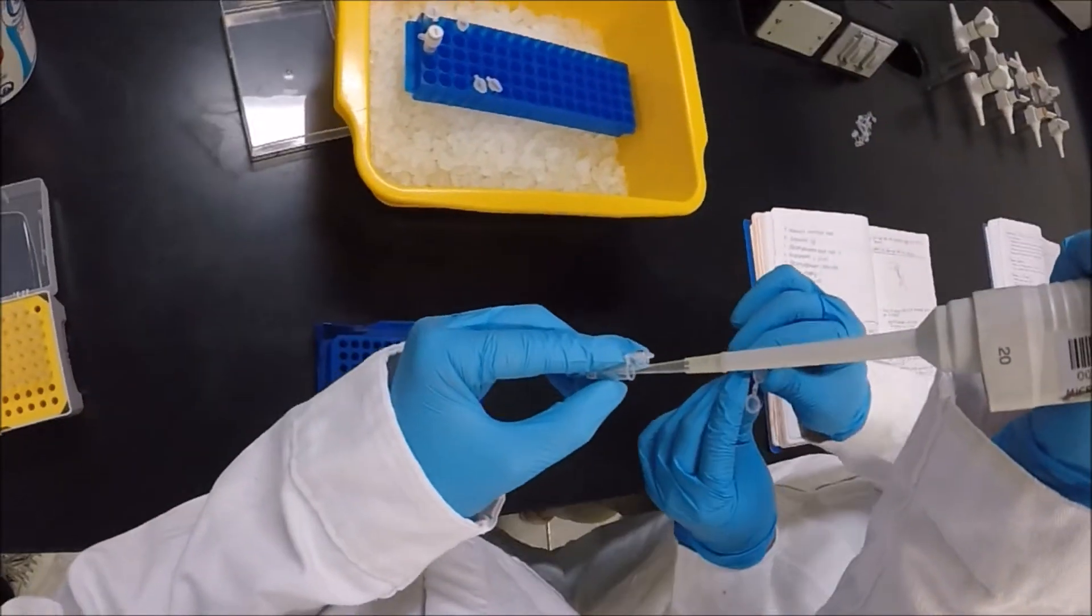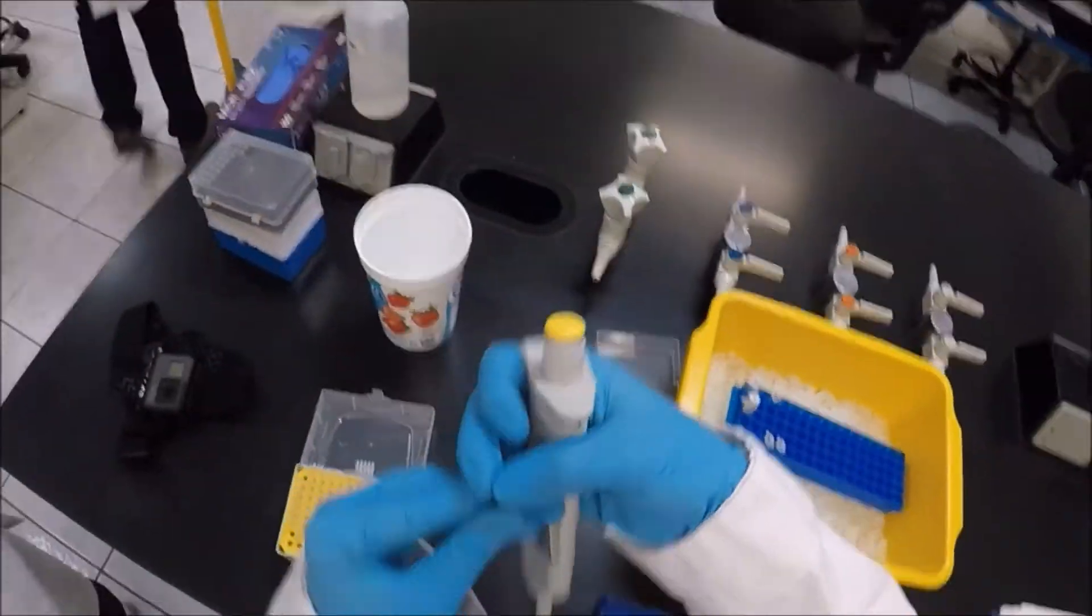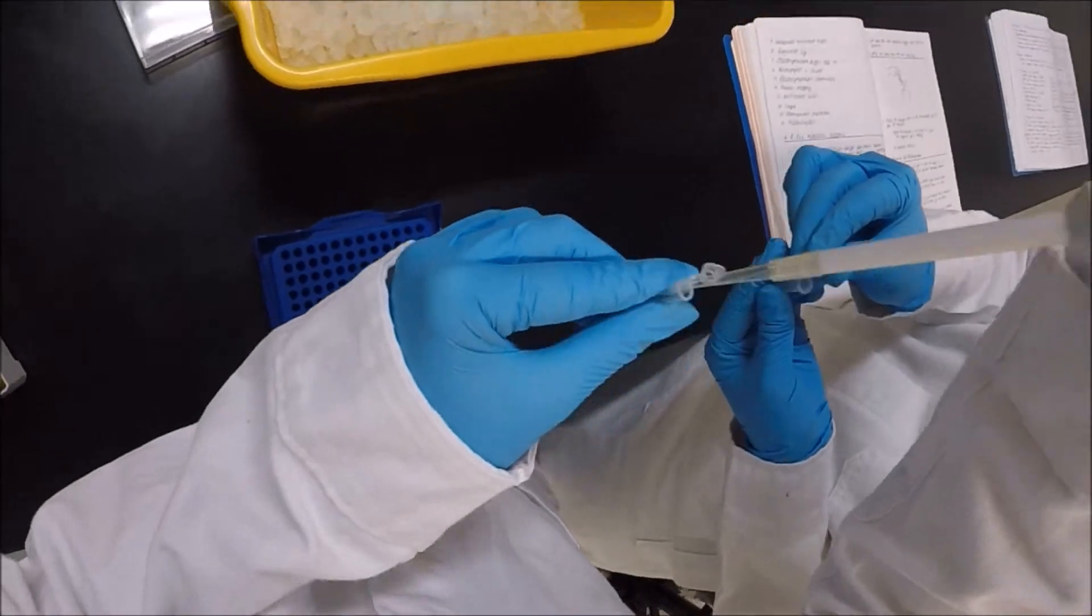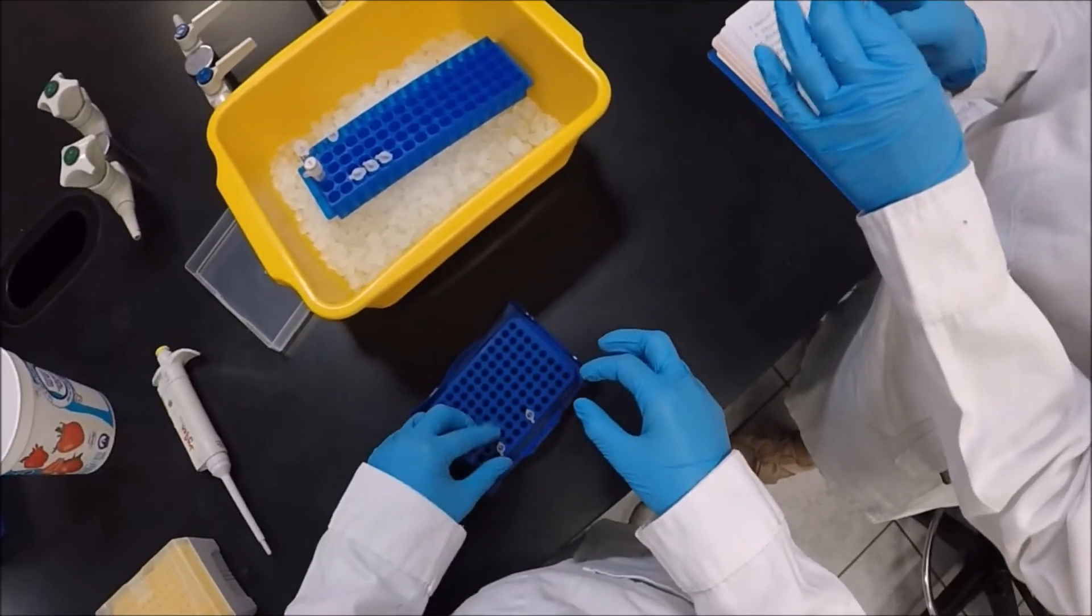For the corresponding tubes, 1 microliter of the restriction enzymes was added: PstI for the P tube, EcoRI for the E tube, and HindIII for the H microtube. In order to mix all the reagents, each tube was tightly capped and flicked.